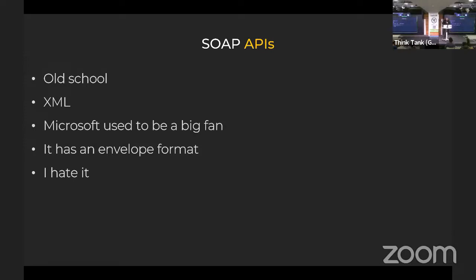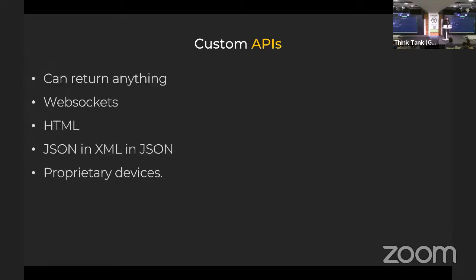SOAP — really old-school Microsoft, they implemented it and supported it up until a couple of years ago. It uses XML for God knows what reason, it has an envelope format, I hate it with all my heart. Then we have custom APIs — can return anything: open WebSockets, HTML, JSON in XML, whatever. It's usually used for proprietary devices and typically medical devices, which you can feel the pain when you see that.